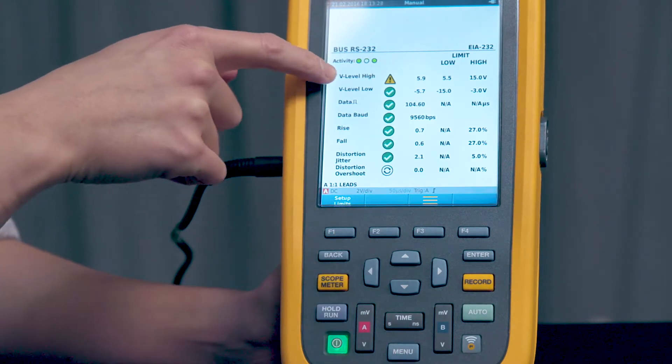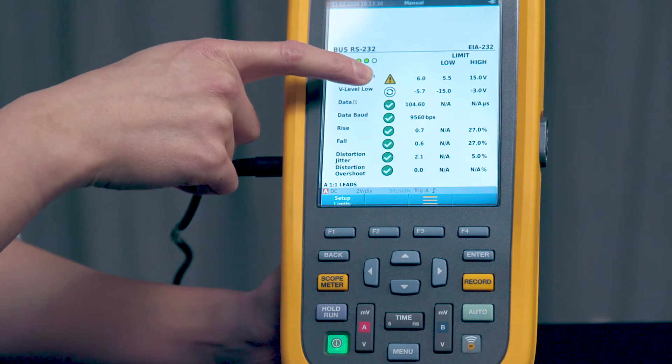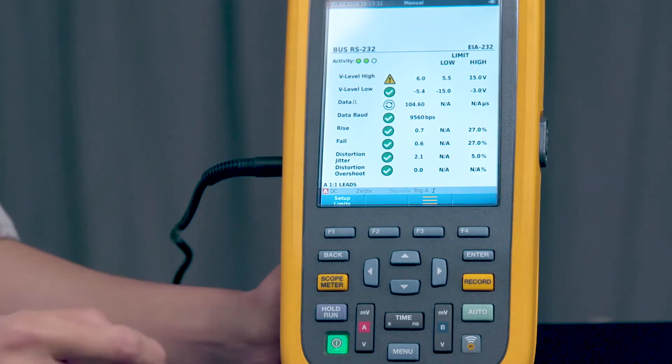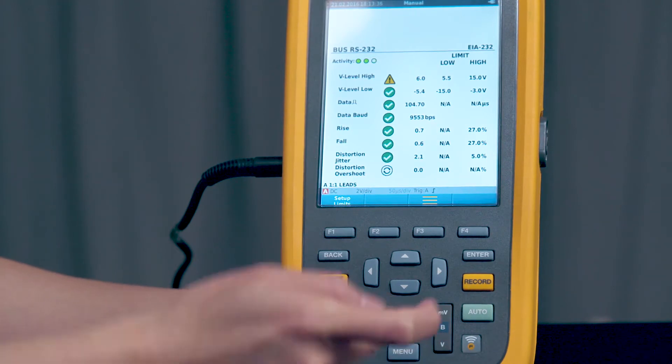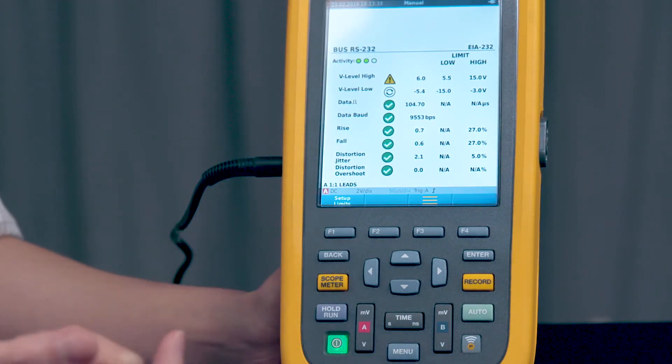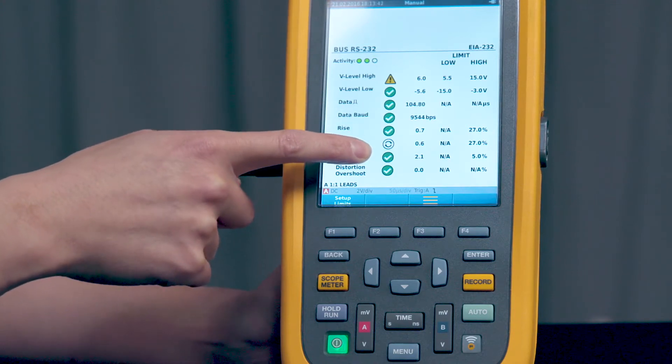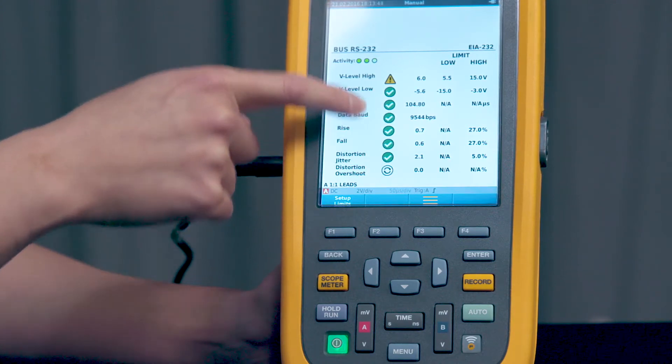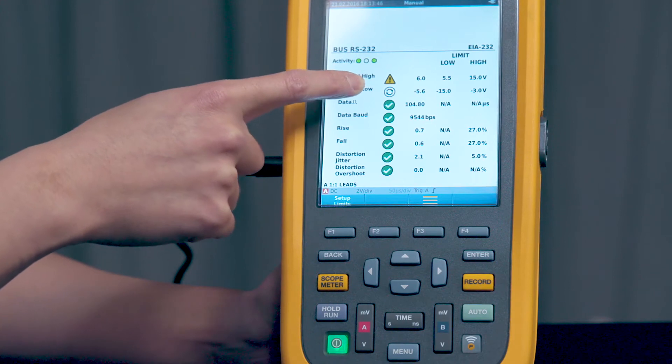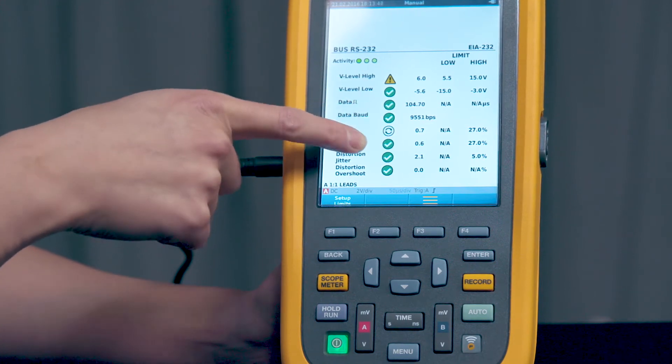You'll notice here VLevelHigh shows an exclamation mark. That means that the reading is between 80 to 100% of the allowable range. And if it's got a check mark, then your reading is okay. You also notice that the cycle symbol is appearing next to each test. That indicates which test it's executing right at that moment.